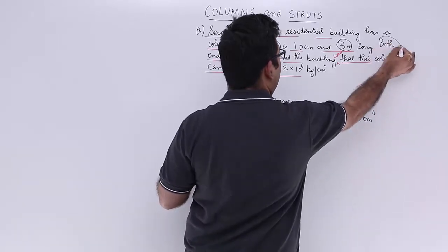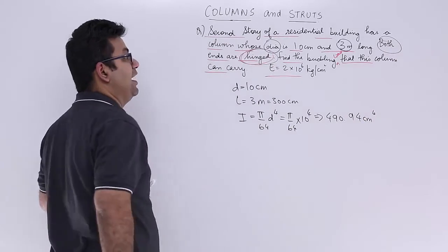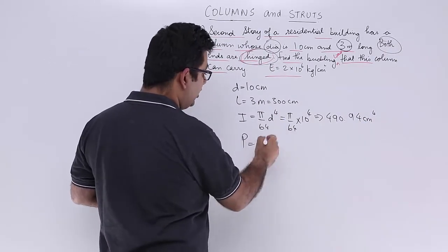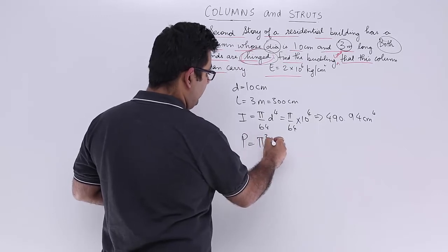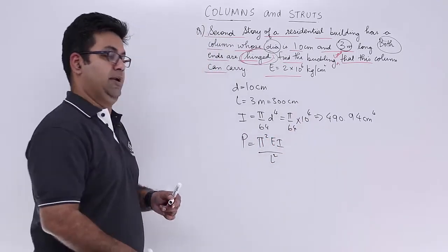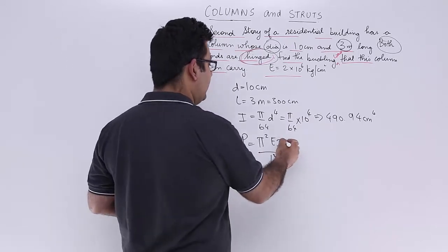Now look at the end condition. Both the ends are having a hinge joint. So in that case the buckling load is given as π² EI upon length square. So just put in the values. Very simple.